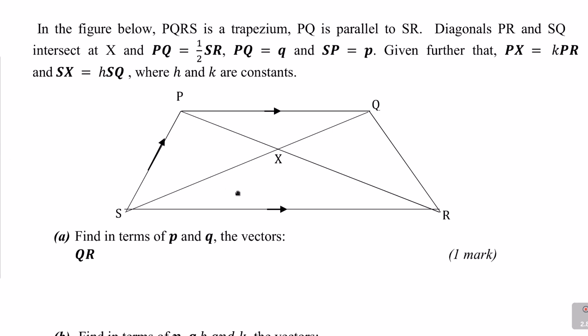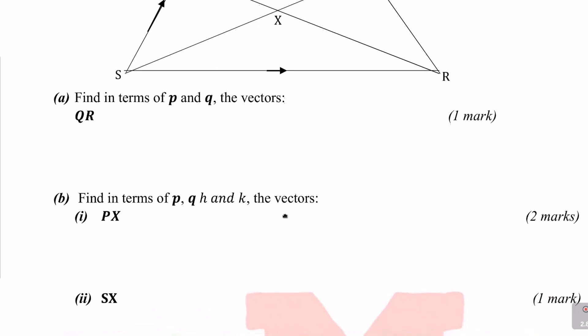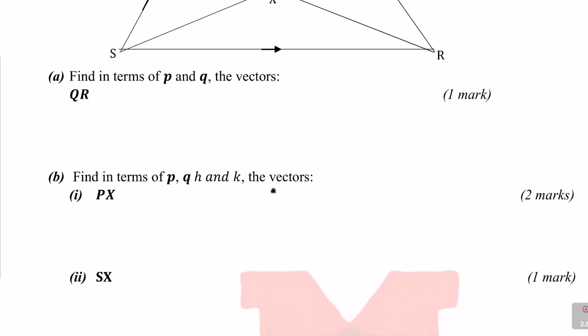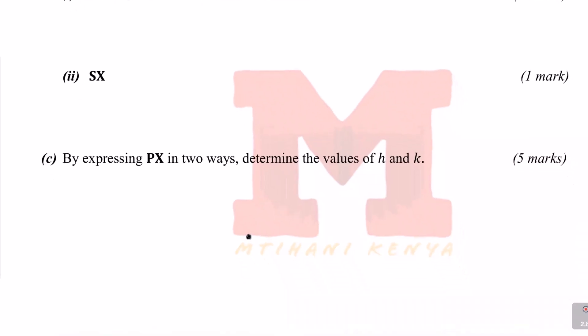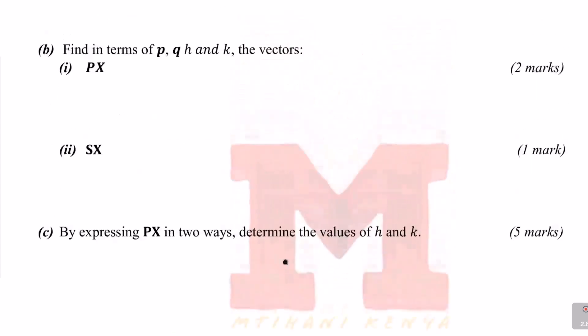Part A of the question: find in terms of P and Q the vector QR, for one mark. Then part two: find in terms of P, Q, H and K the vectors PX and SX. Then part C: by expressing PX in two ways, determine the values of H and K. So those are the questions.